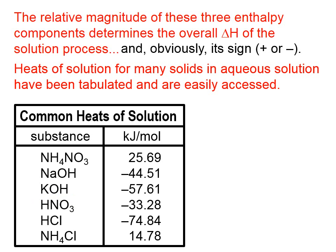If you look at the heats of solution for these acids, you can see there is a net release of energy. This is why whenever you are mixing an acid with water, you want to start with a large quantity of water and then add your acid in, so that the large quantity of water is available to absorb the heat released. This is why we add acid to water and not water into acid — something you might have used in a high school chemistry laboratory.